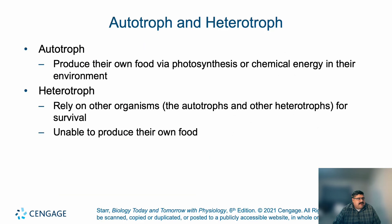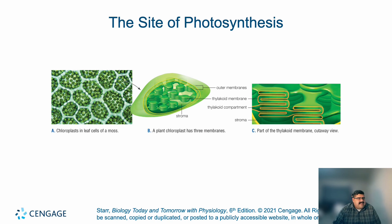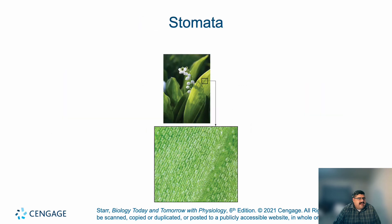Some key terms to remember: autotrophs produce their own food via photosynthesis or chemical energy from their environment. Heterotrophs rely on other organisms — autotrophs and other heterotrophs — for survival and are unable to produce their own food; carnivores are heterotrophs. The chloroplast is the organelle of photosynthesis in plants and some protists. The thylakoid membrane is a highly folded intermembrane system forming continuous compartments in the stroma. The stroma is the semi-fluid matrix between the thylakoid membrane and the two outer membranes of the chloroplast. Stomata are the tiny pores that open and close to allow gas exchange between the plant's internal tissues and air — this is where oxygen escapes.